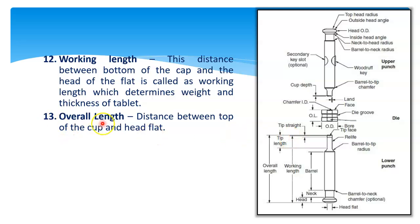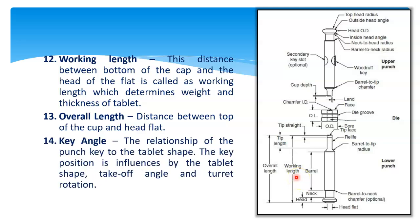Then overall length — the distance between the top of the cap and the head flat. The overall length is always greater than working length. Then key angle — the relationship of the punch key to the tablet shape. The key position is influenced by the tablet shape, takeoff angle, and turret rotation.